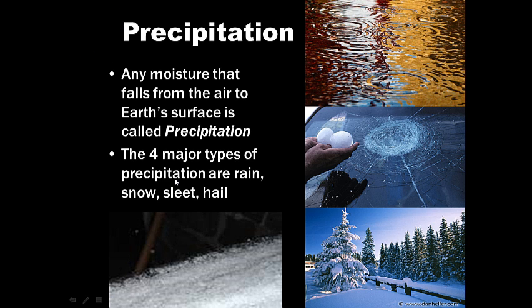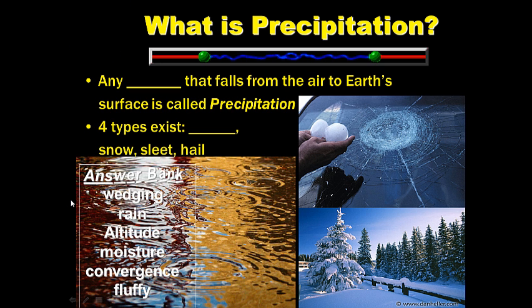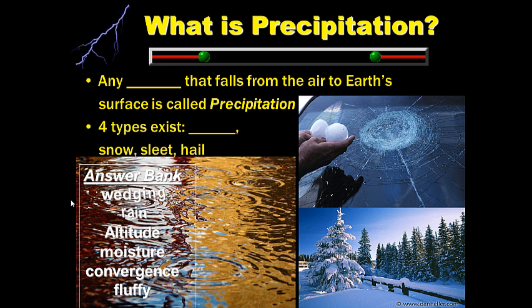Precipitation: any moisture that falls from the air to the earth's surface is called precipitation. There are four major kinds: rain, snow, hail, and sleet. For your notes, write what precipitation is — question on the left-hand side, answer on the right-hand side. Use the answer bank to determine which words best complete the sentence. Go ahead and pause this.